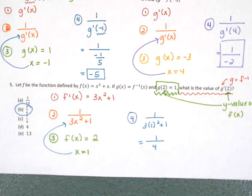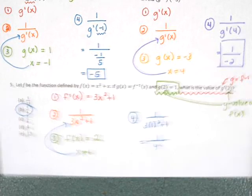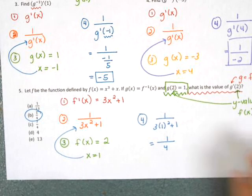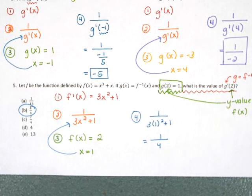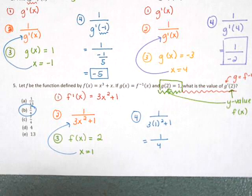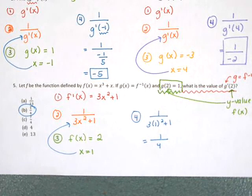On the AP test, problems like 3, 4, and 5 are really the types you're going to see — you're never really going to see problems like 1 and 2, which is why I spent more time in this video on those. Tomorrow in class we're going to practice this pattern of solving many times.